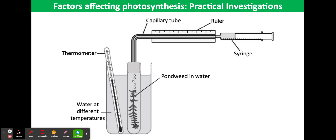The volume of gas collected will equal the length of the bubble times pi r squared. If the same apparatus is used throughout the investigation, the radius of the tube bore is constant, so comparisons can be made using just the bubble length.